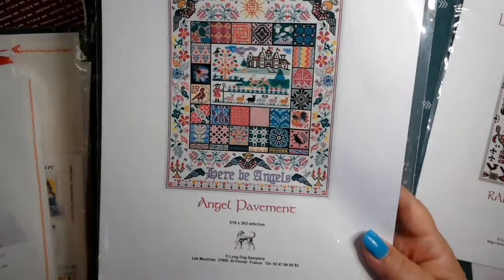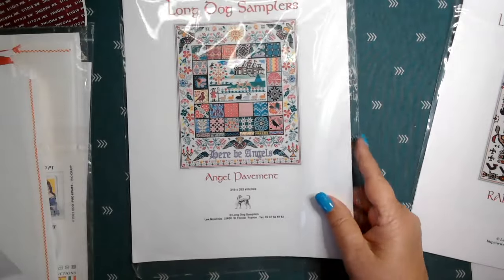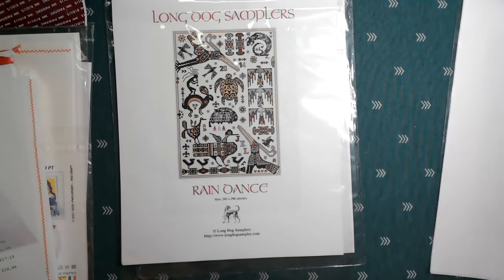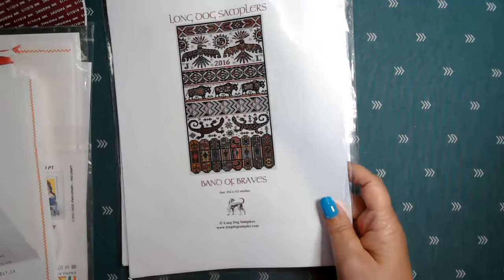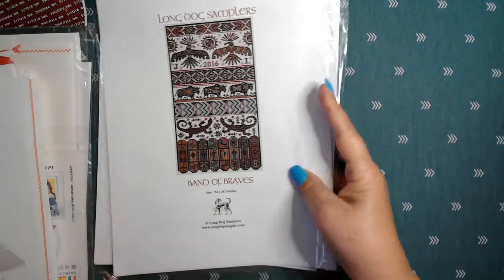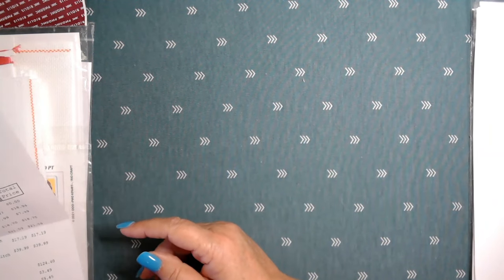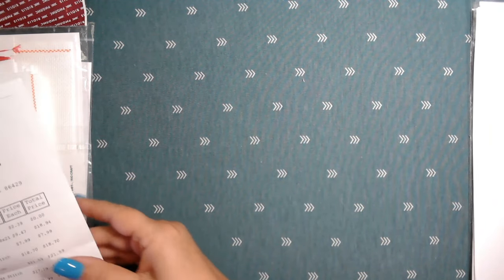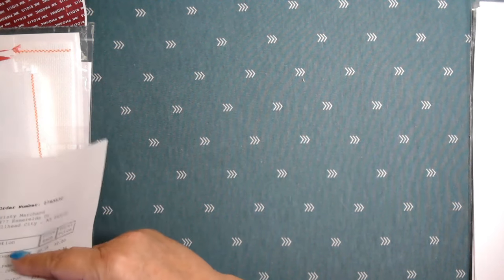And then, oh wait, here's the invoice. Okay, so I do have some prices for you. Angel Pavement was $18.70. Rain Dance was $21.59 for the pattern. And Band of Braves was $17.90. Yes, they are more expensive than getting one of the kits like I usually show from the overseas companies. But these patterns are spectacular. I think they're so worth the money.